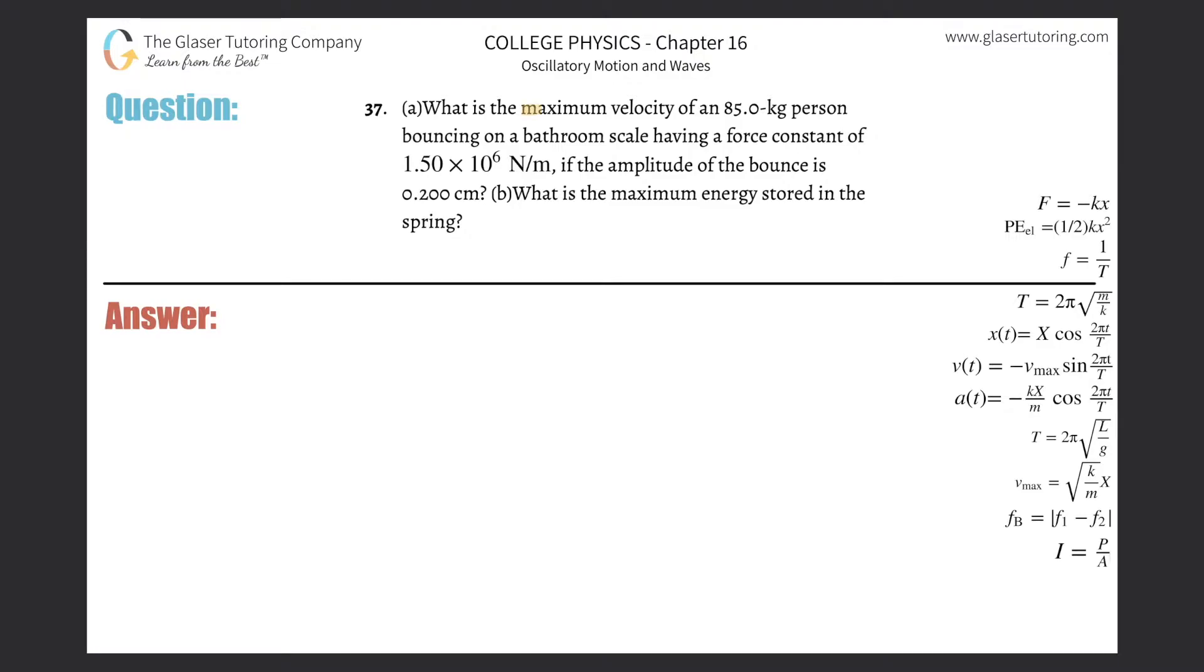Number 37, letter A: What is the maximum velocity of an 85 kilogram person bouncing on a bathroom scale having a force constant of 1.5 times 10 to the 6 newtons per meter if the amplitude of the bounce is 0.2 centimeters? So v_max is what we're looking for.